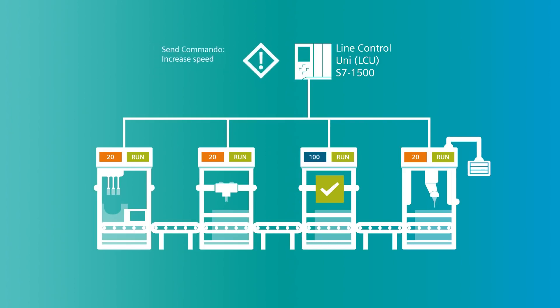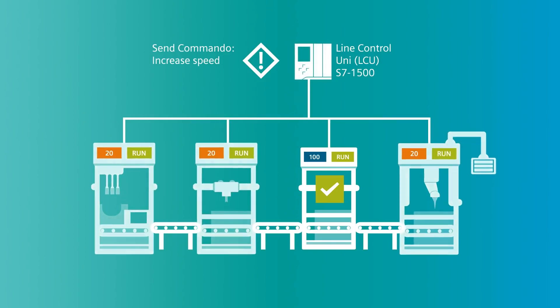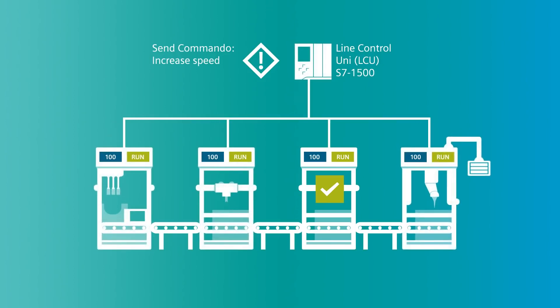The four strategies are: Line Speed Setpoint, Line Supervision, Buffer Control, and Bottleneck Machine. The Line Control Unit concept is also available for you to download from Siemens Industry Online Support.